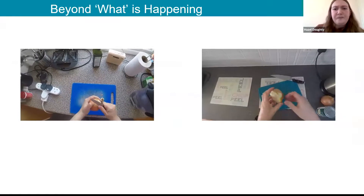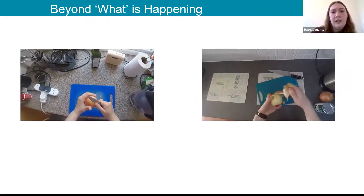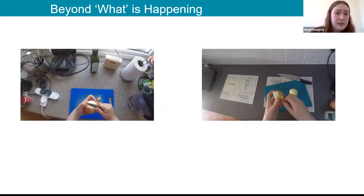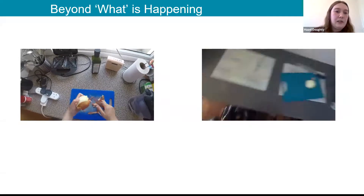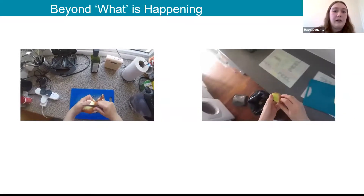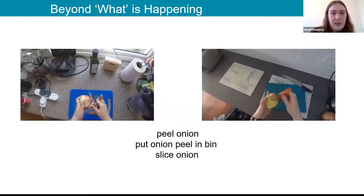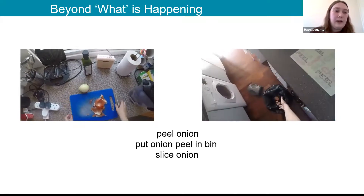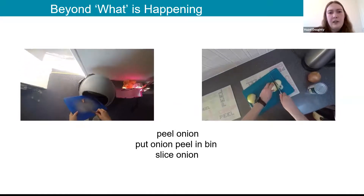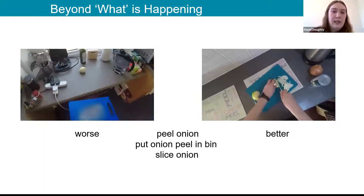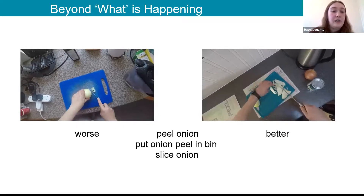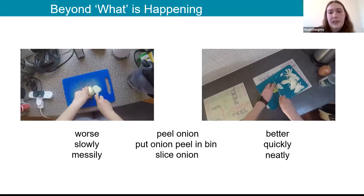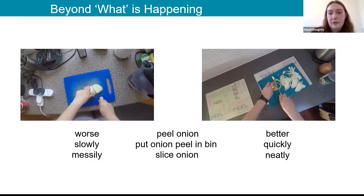Looking at two EPIC Kitchens videos of people peeling onions, fine-grained action labels would label them identically. Yet humans can see differences: one person might do the peeling more neatly, chop more quickly, and do the chopping better. These differences — how people perform their actions and how well they do them — are what the next part of the talk focuses on.